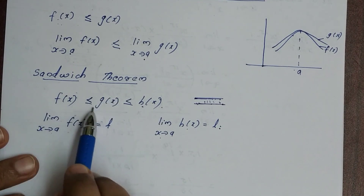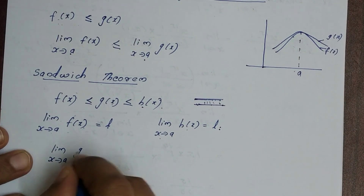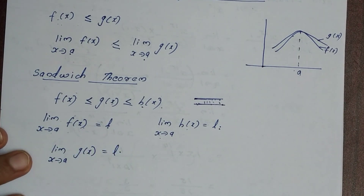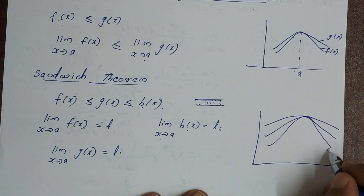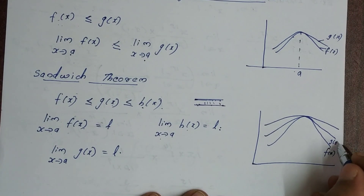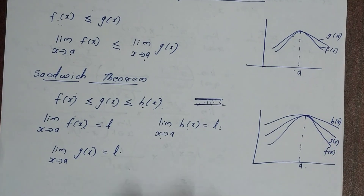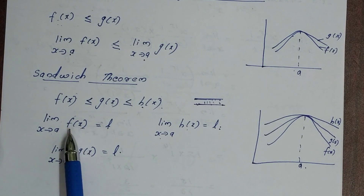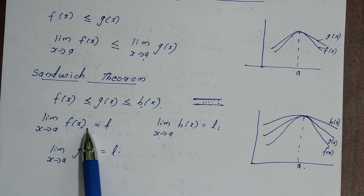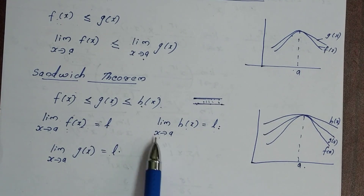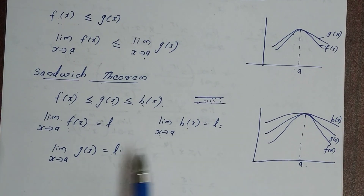Let's go to the graph. If I have a function f of x, this is g of x, and this is h of x. This is the function at point a. The value of g of x is equal to L, the value of f of x is equal to L, and the value of h of x is equal to L.